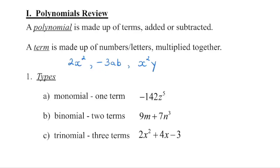I've listed three terms here and within each term we can see there's a variable. In this one we have an x, a coefficient of 2, and the exponent on the variable is 2. In this one we have a coefficient of negative 3 and we have two variables, a and b. The exponents on each of those variables is a 1.